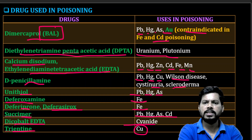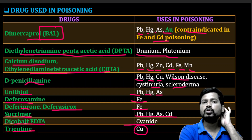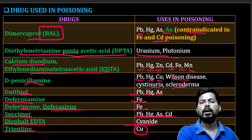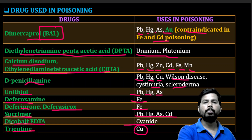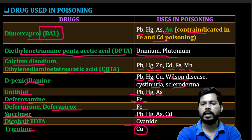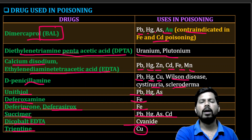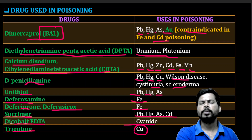This table of chelating agents and their uses is very important. You will definitely get a question from this table in competitive exams such as GPAT and NIPER.